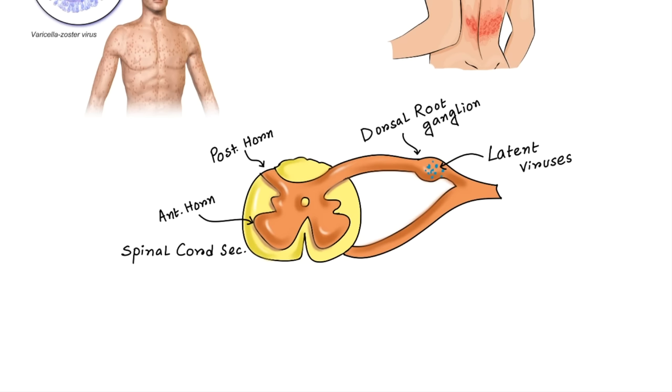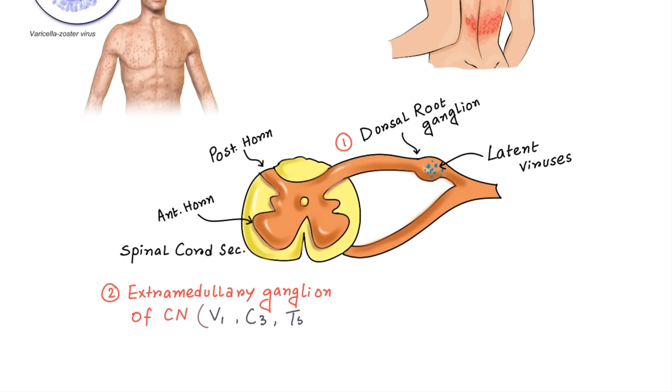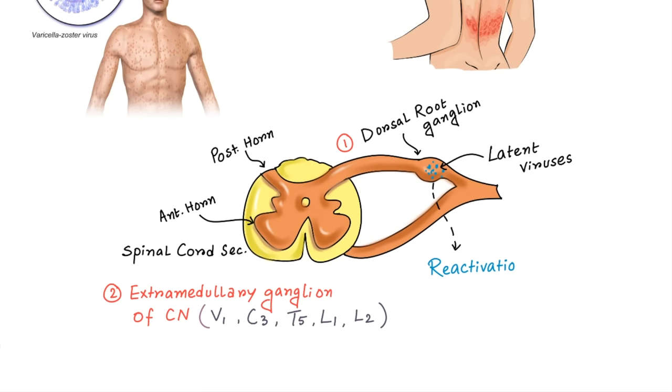Extramedullary ganglion of cranial nerves are also affected commonly V1, C3, T5, L1 and L2. Reactivation produces Herpes Zoster infection, which is commonly called shingles, which means belt-like.